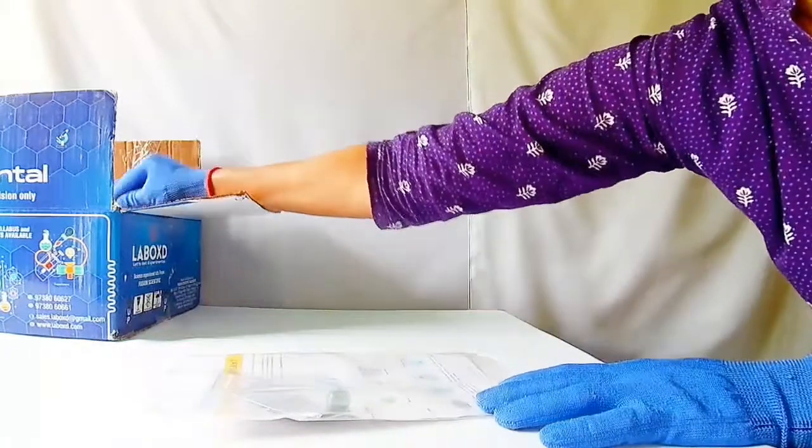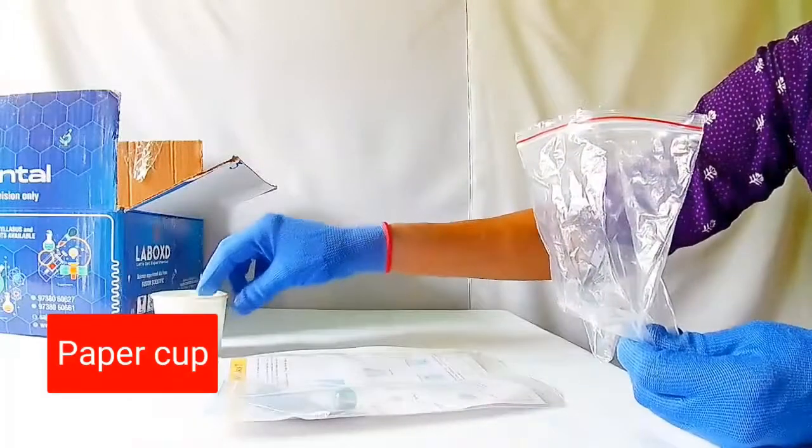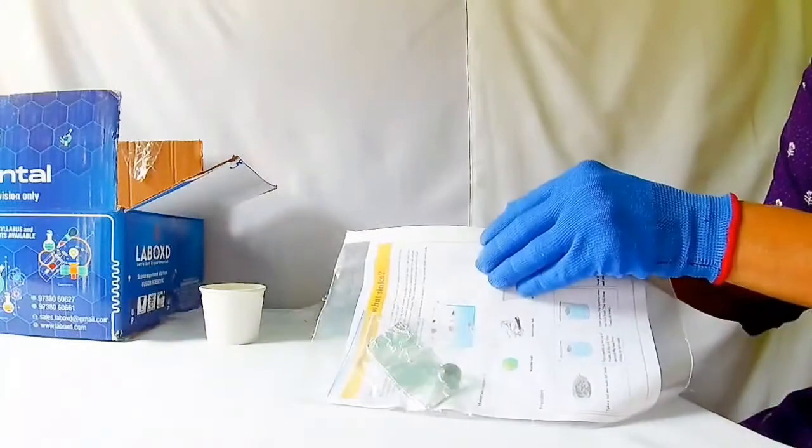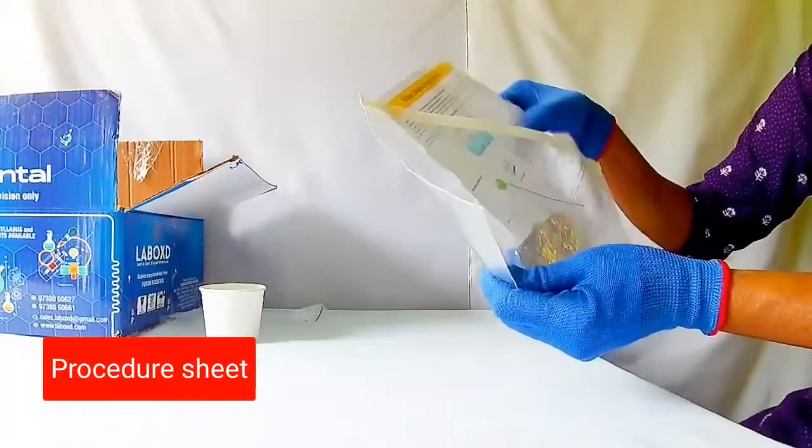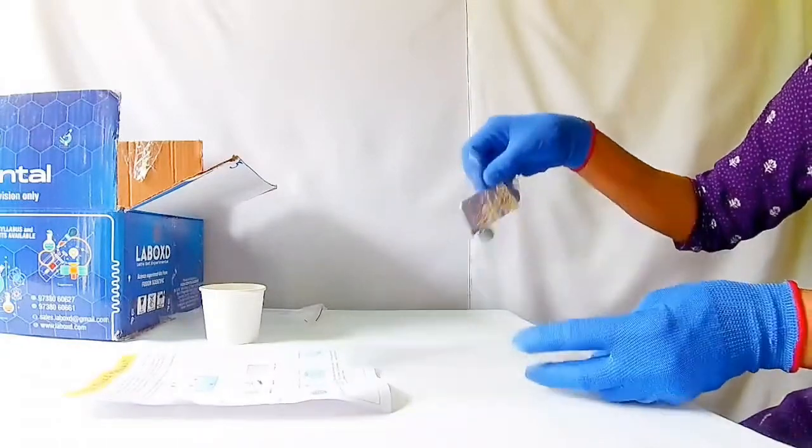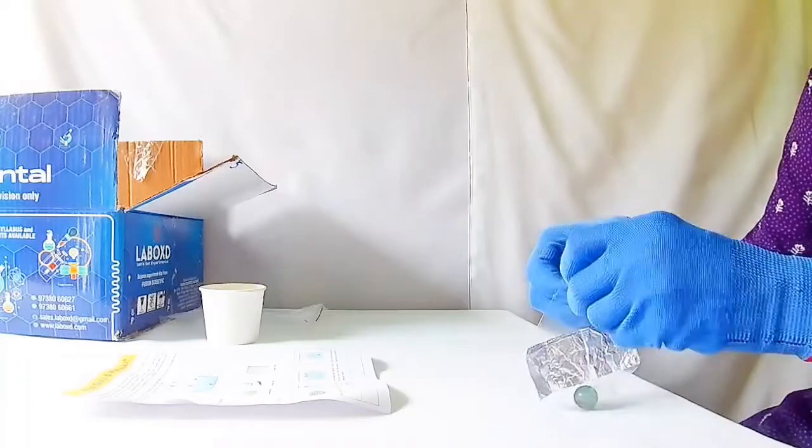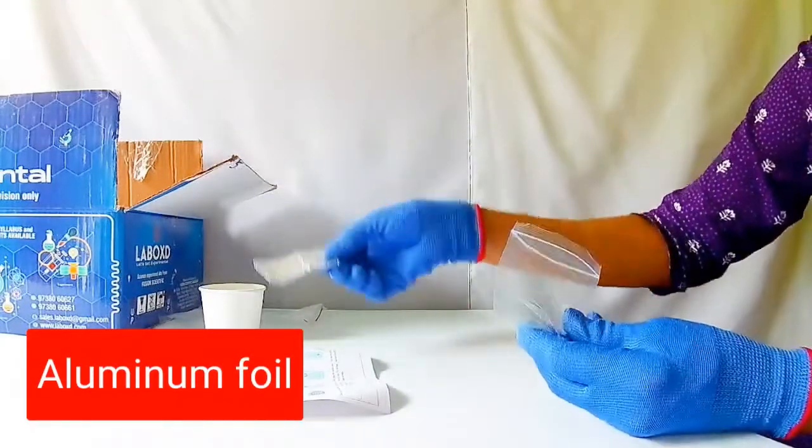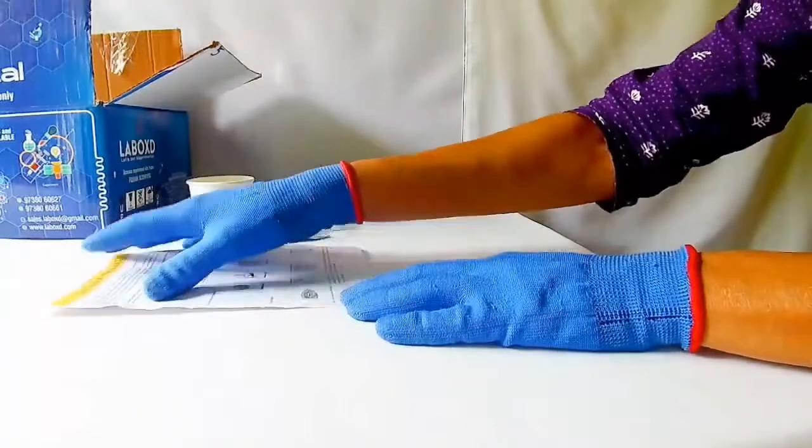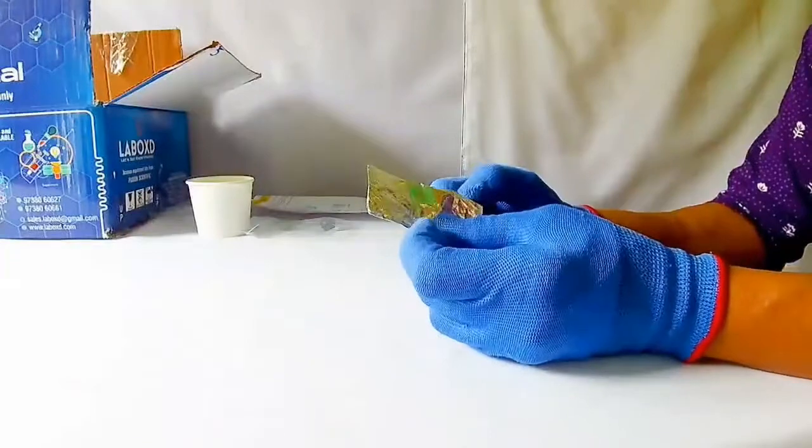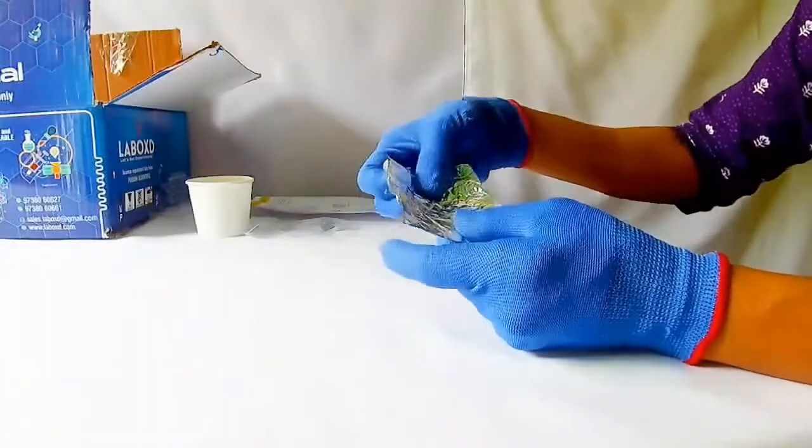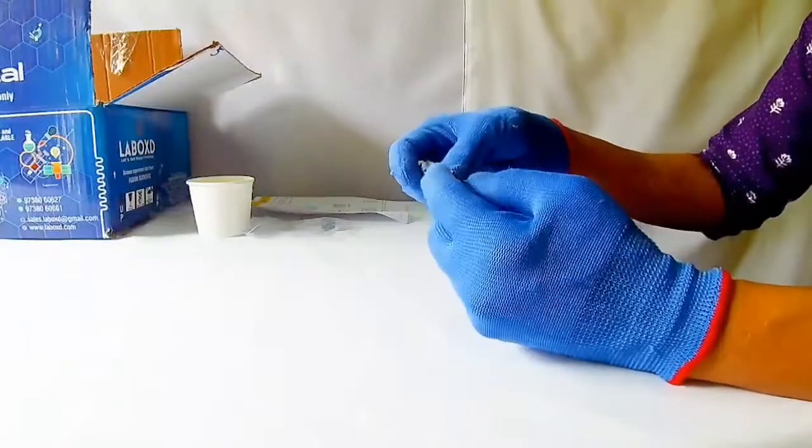This activity helps us to learn the concept of floating and sinking. The activity kit contains a paper cup, procedure sheet, aluminum foil and marble.